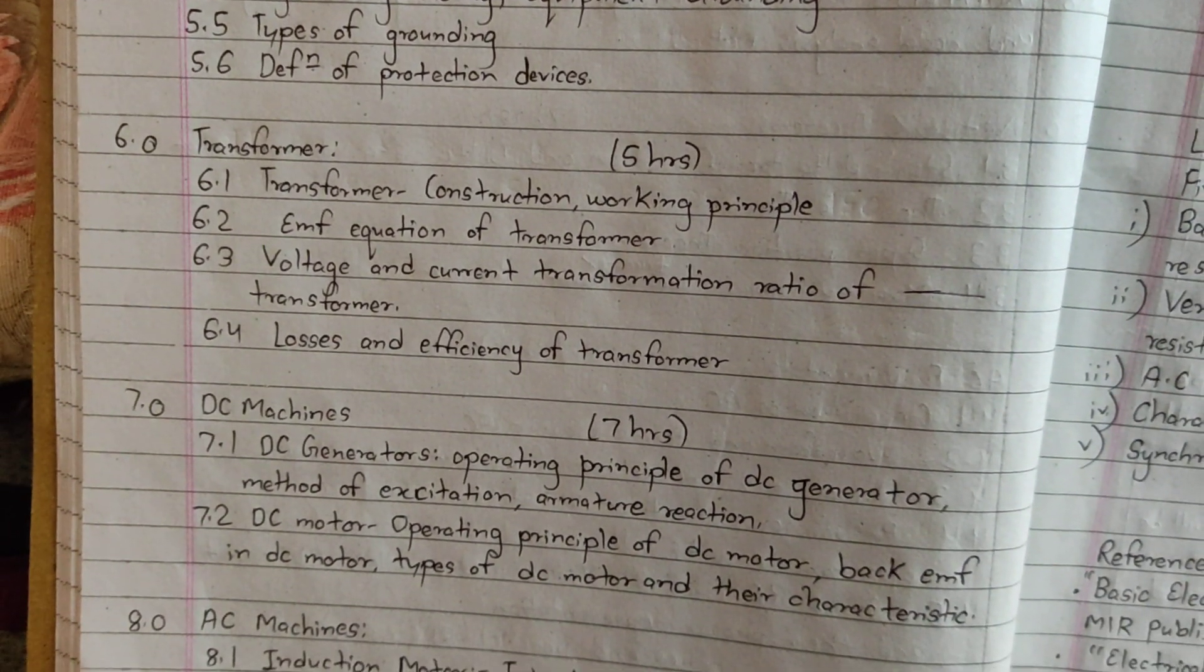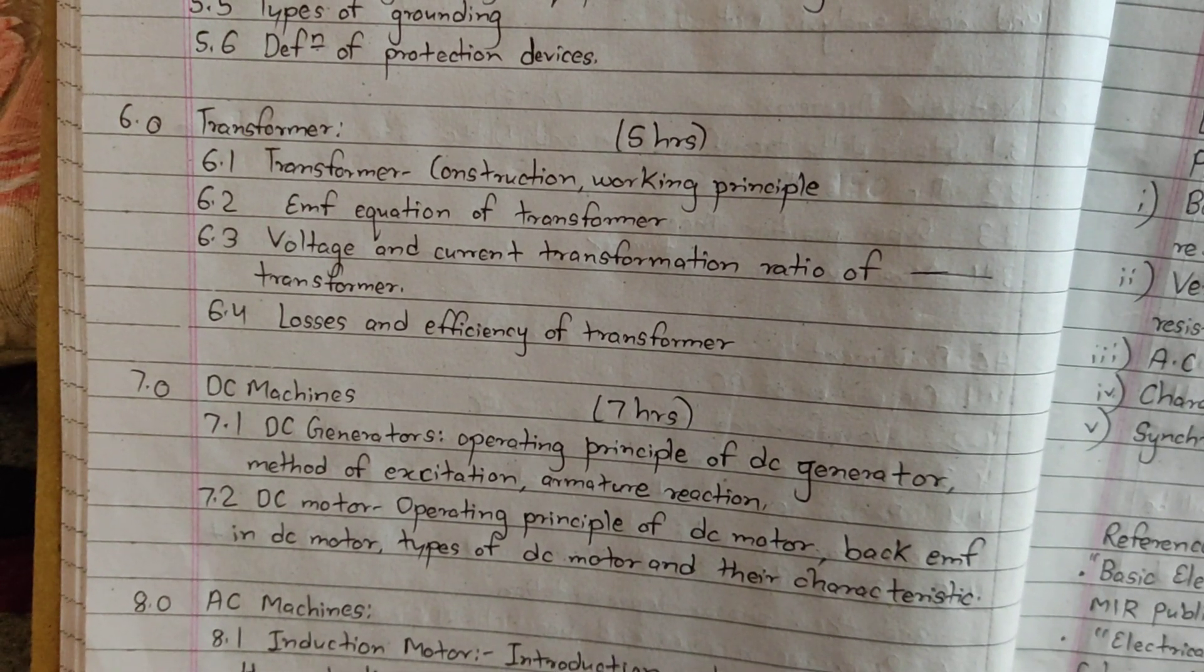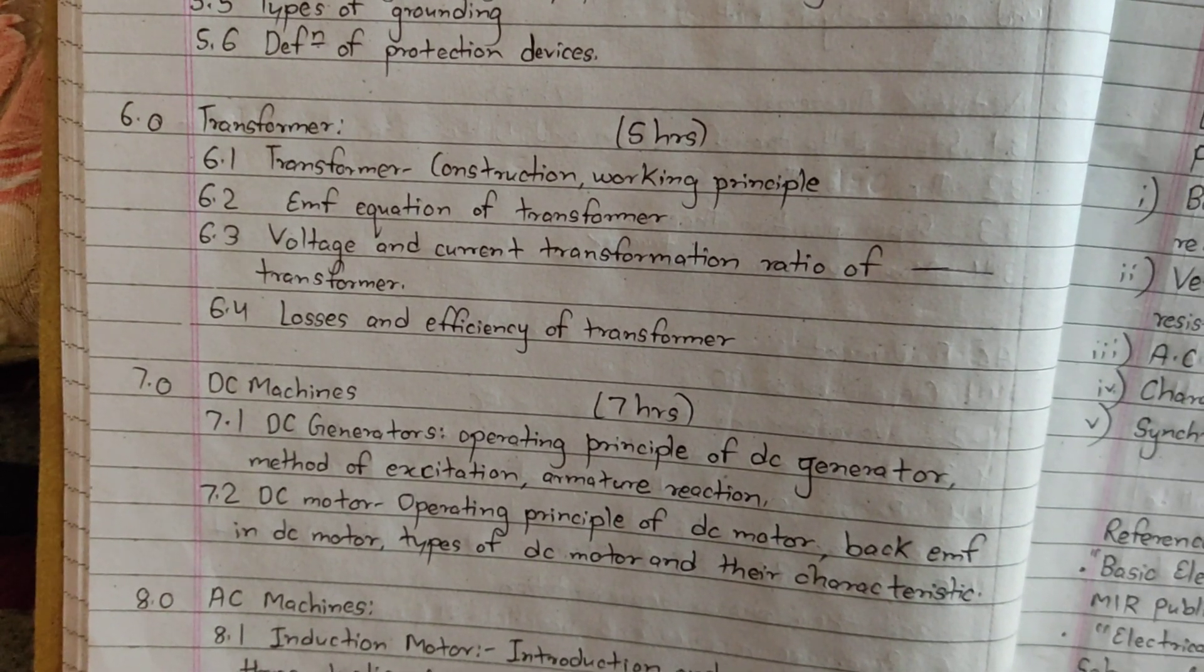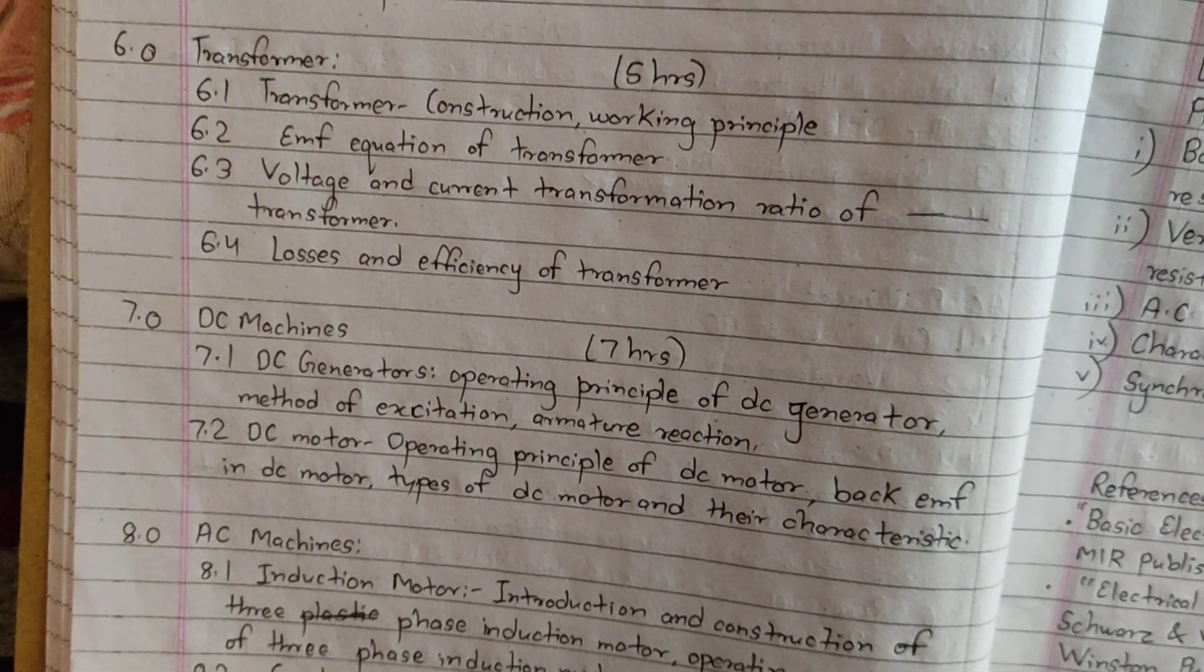This is the chapter 6 major transformer: construction working principle, EMF equation of transformer, voltage and current transformation ratio of transformer, losses and efficiency of transformer.